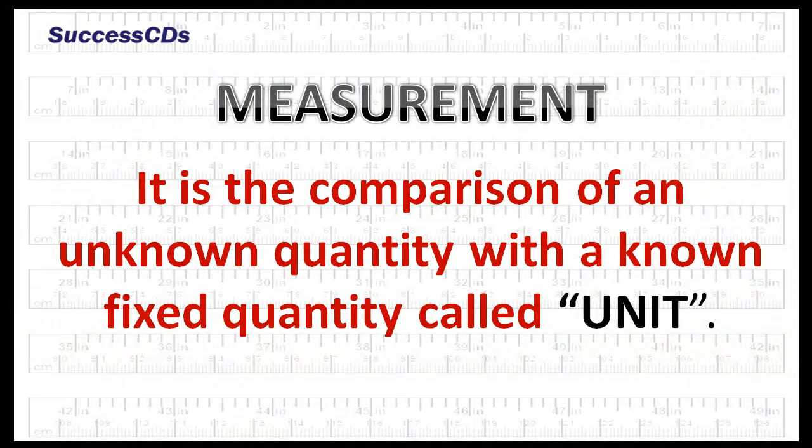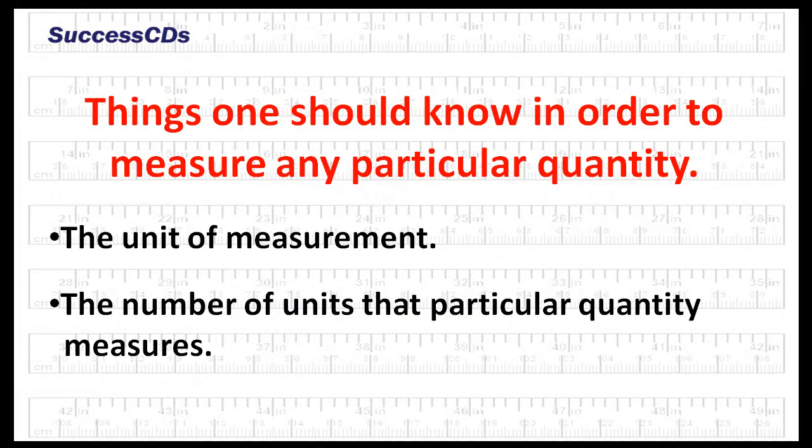It is the comparison of an unknown quantity with a known fixed quantity called unit. Things one should know in order to measure any particular quantity: the unit of measurement and the number of units that particular quantity measures.